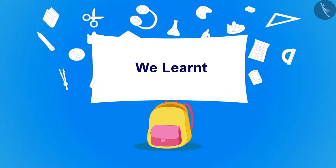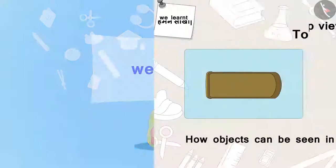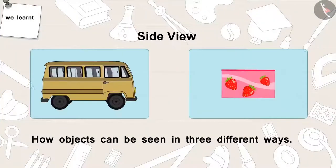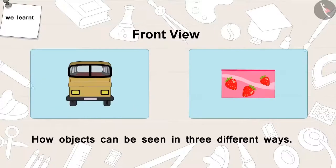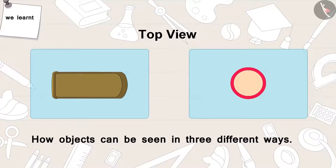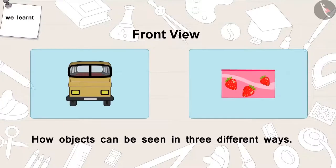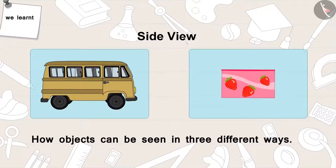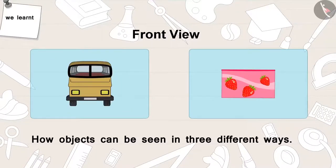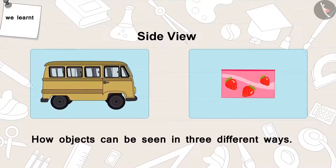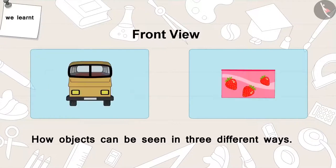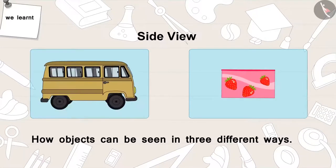Children, in this part we learnt how objects can be seen in three different ways: from above — top view; from front — front view; and from the side — side view. We will learn more about this with the help of some interesting examples.